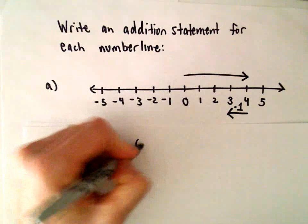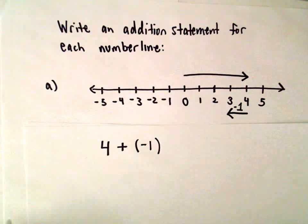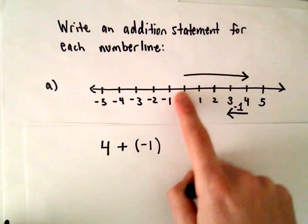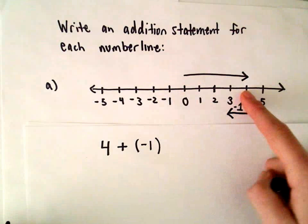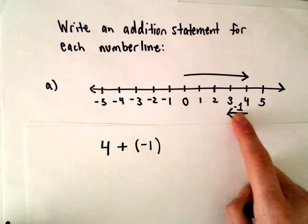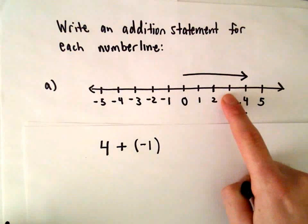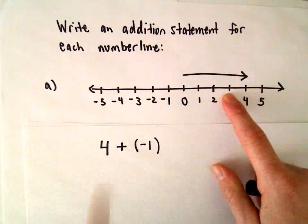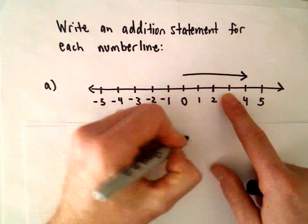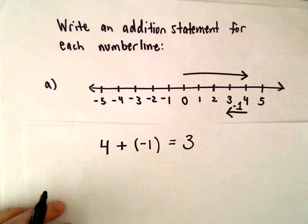So we've got positive four plus negative one. From the number line you can see that if we go four units to the right, and then add negative one, which takes us back one unit to the left, this would be our addition statement. That equals positive three.